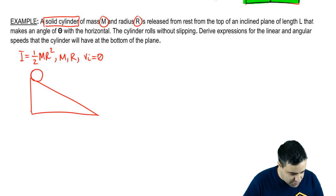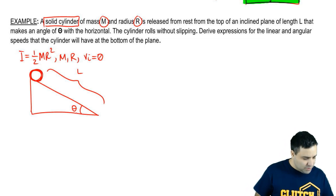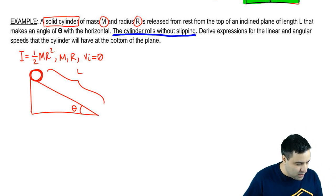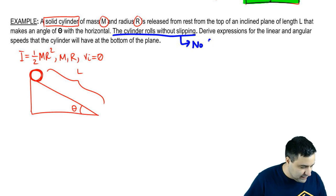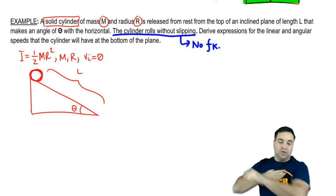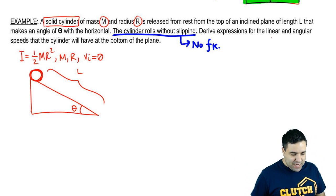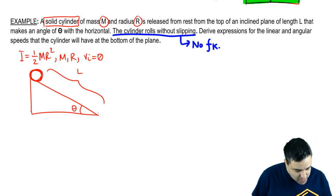Let's draw this here. So you've got a solid cylinder all the way at the top here. This plane has a length of L, and it makes an angle of theta with the horizontal. The cylinder rolls without slipping, which means that there's no kinetic friction. No kinetic friction, there's no rubbing of the cylinder on the surface. It just rolls. And I want to derive an expression for the linear and angular speed at the bottom of the plane. So when it's here, I want to know what is V final and what is omega final.